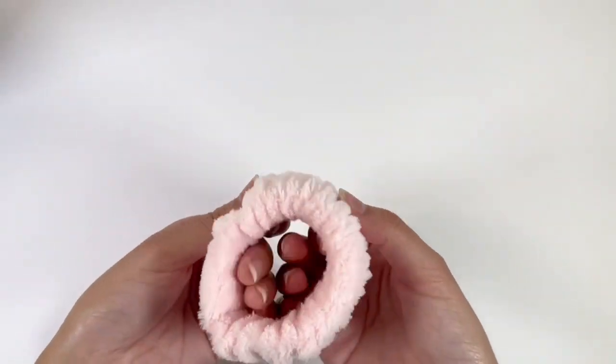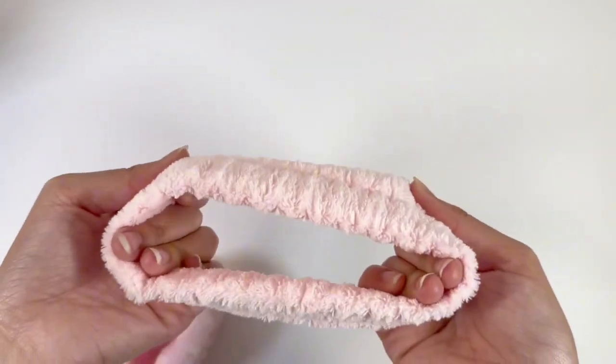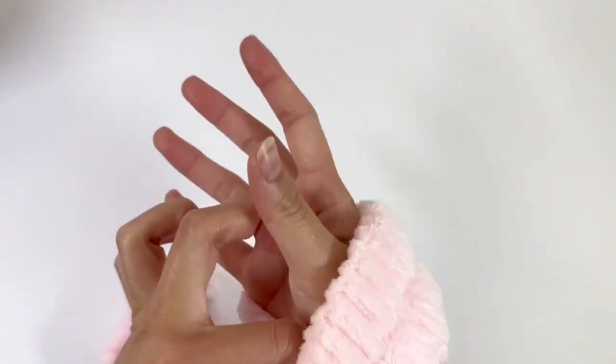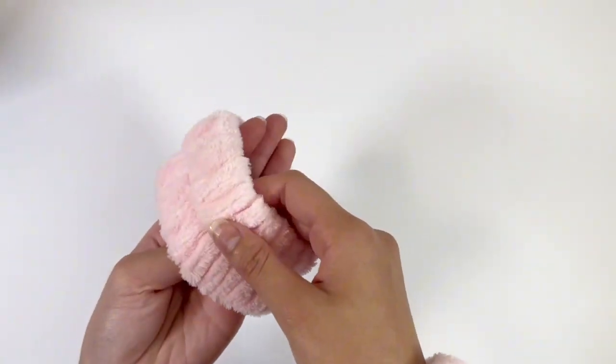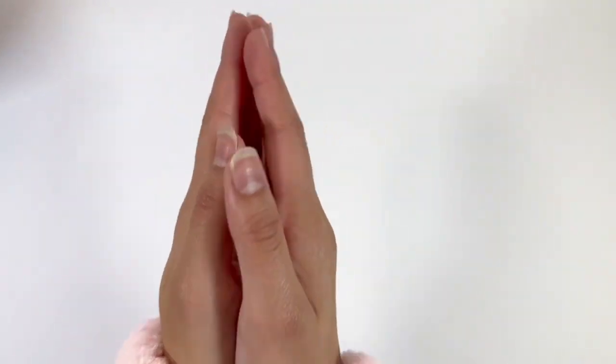Hello everyone, today we have the face washing wristband. These are water absorbent wristbands. No matter how you wave your arm, the water will be absorbed by the wristband, so you don't have to worry about the water dripping everywhere.